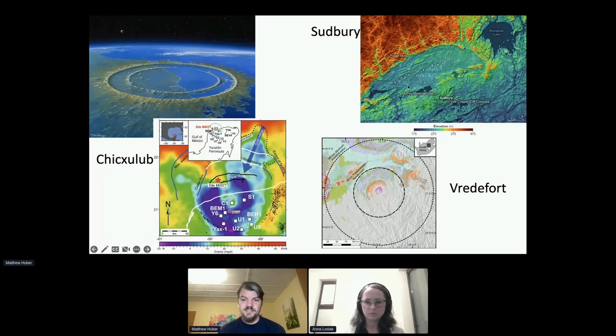The second is the Sudbury impact structure in Canada, which doesn't look anything like a crater. It's been folded in half and has experienced significant tectonic deformation on its southern side. Finally, there's the Vredefort impact structure. On this map, I've only included the geological units that are older than the Vredefort event, and you can see it's only a handful. Most of the space in gray is where younger rocks are covering the structure.